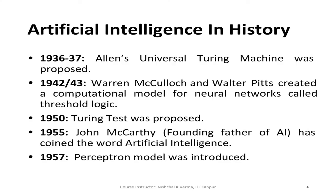Artificial intelligence starts with Alan's universal Turing machine, proposed around 1936-37. Then in 1942-43, Warren McCulloch and Walter Pitts created a computational model for neural networks, also called threshold logic — this was when artificial neural networks started. The ANN model was based on the biological neuron. In 1950, a Turing test was proposed.